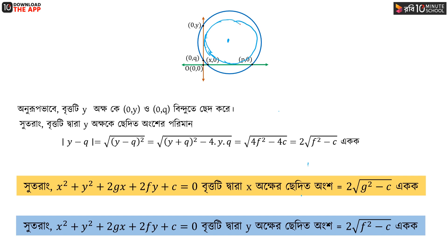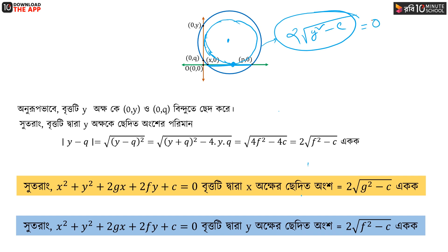If we look at when the intercept is 0, and 2 root of g squared minus c is also 0, then the circle touches the x-axis at exactly one point.